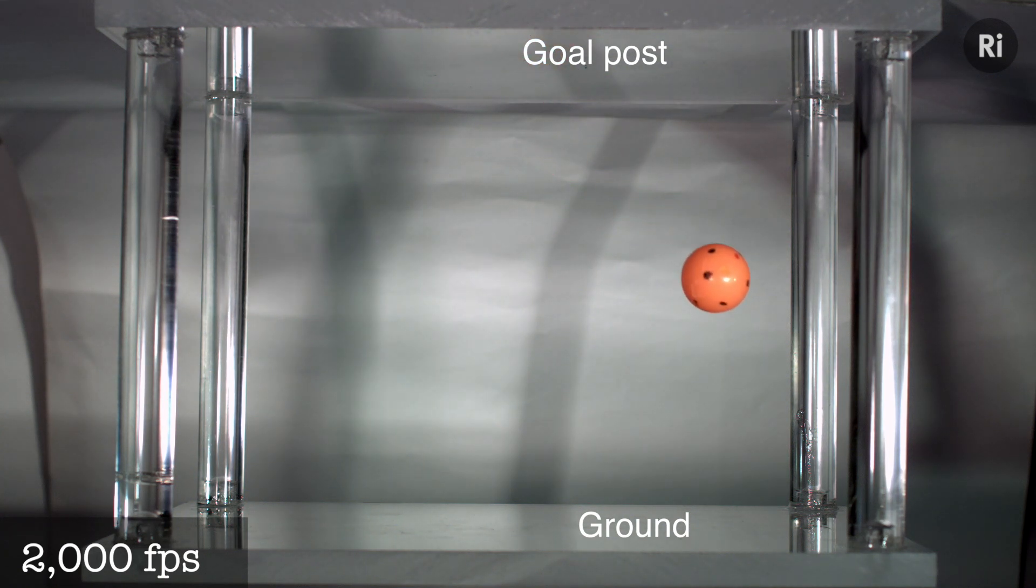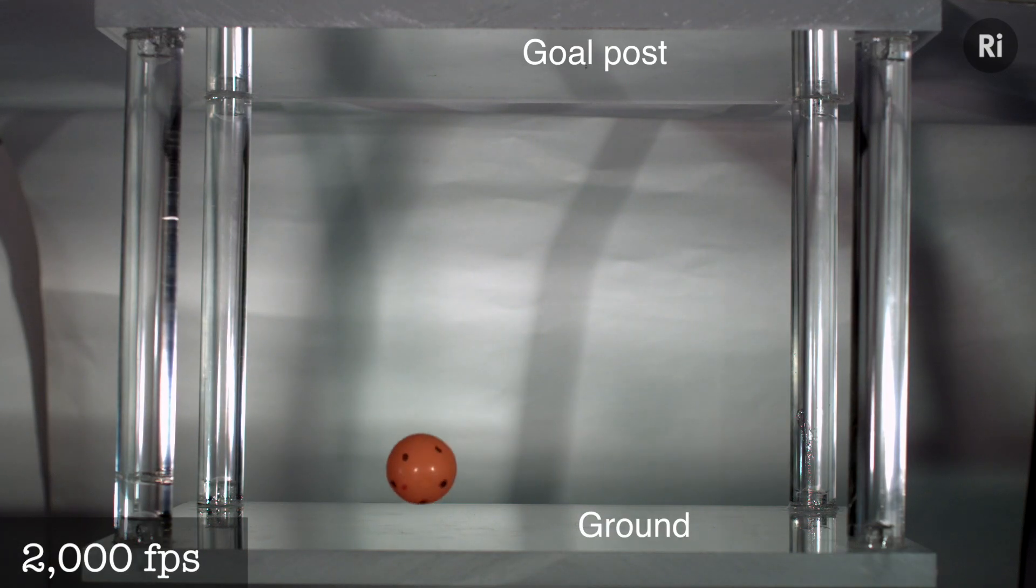Now another interesting thing that happens on that second bounce, if you look really closely, is that the spin itself bounces, it changes direction.